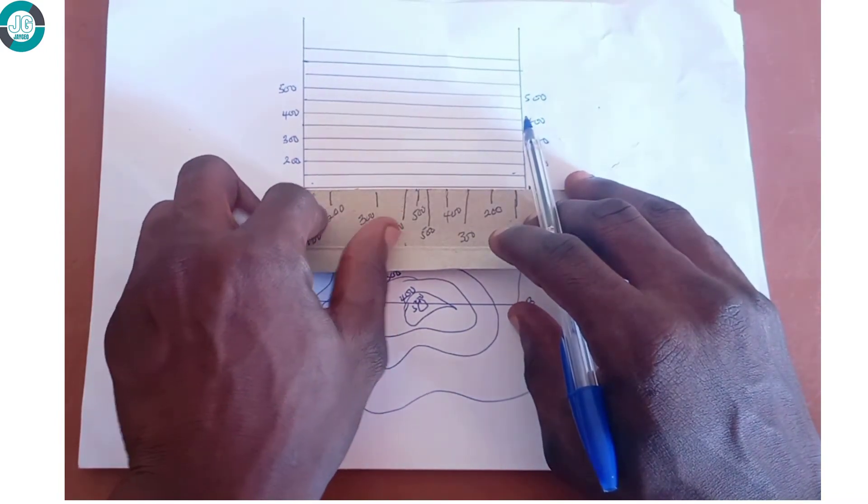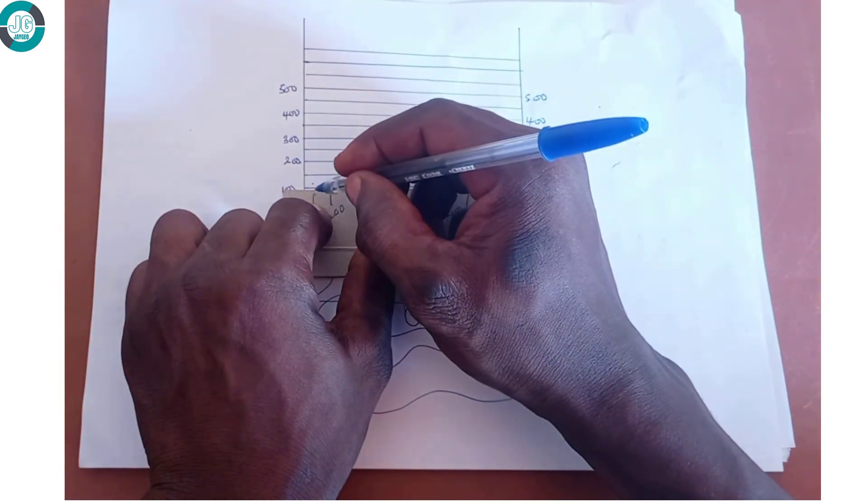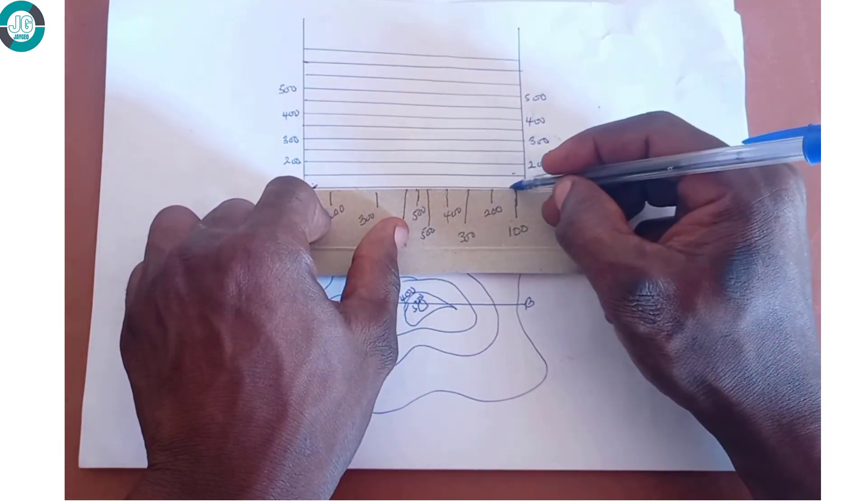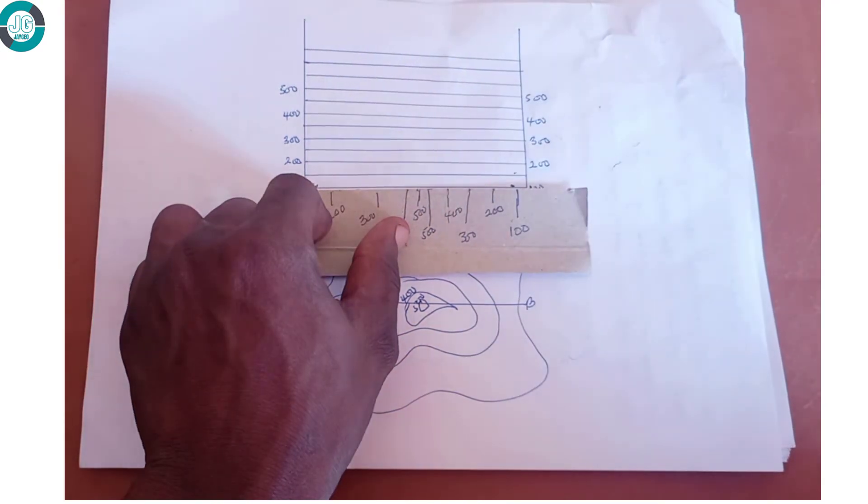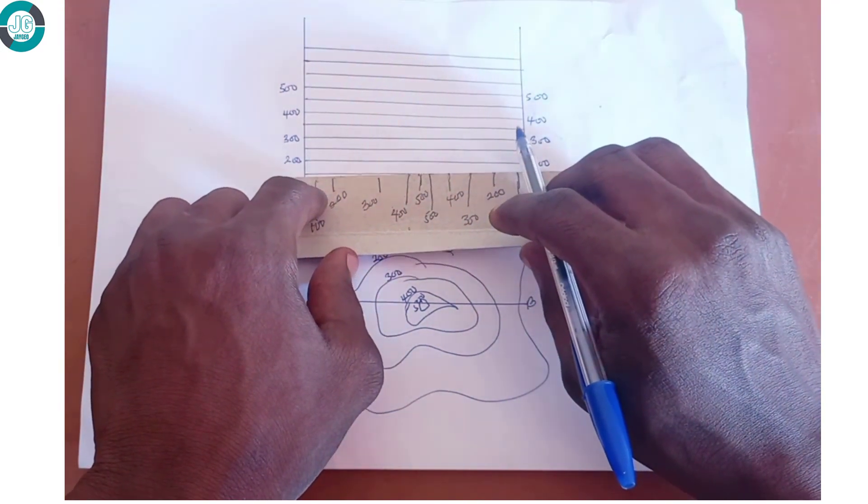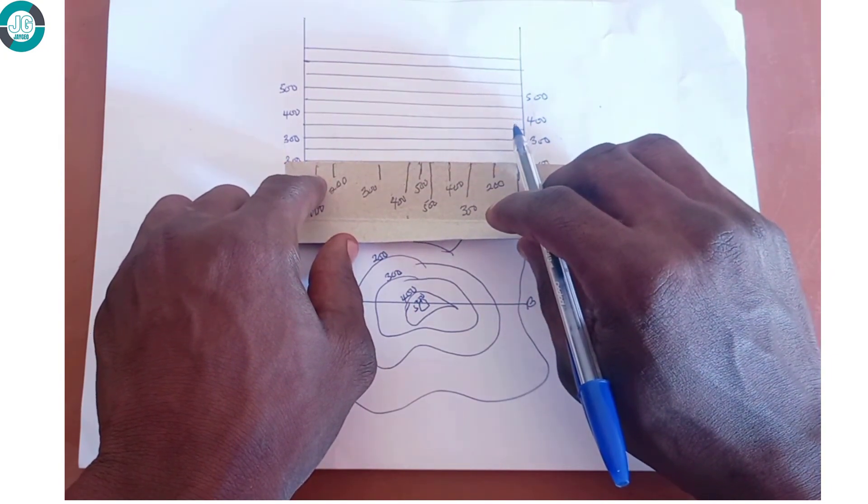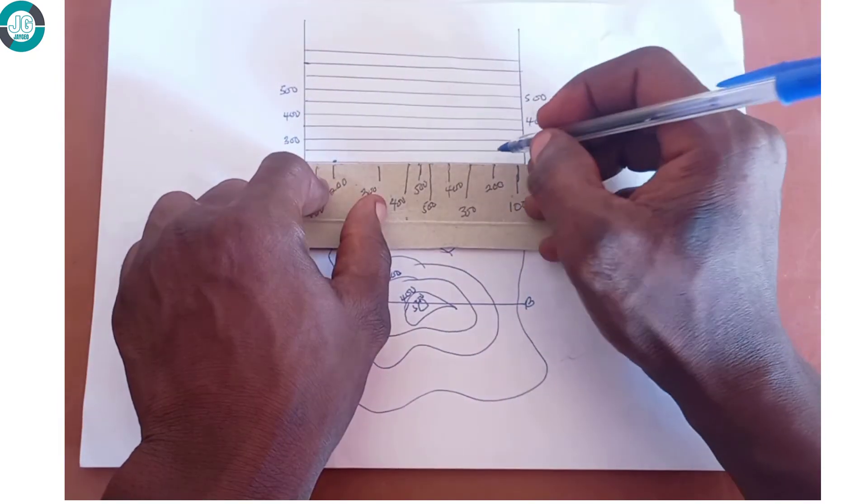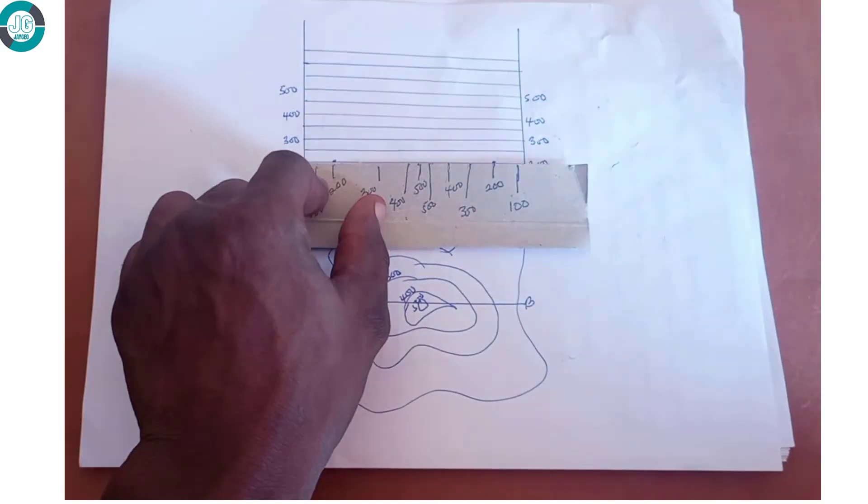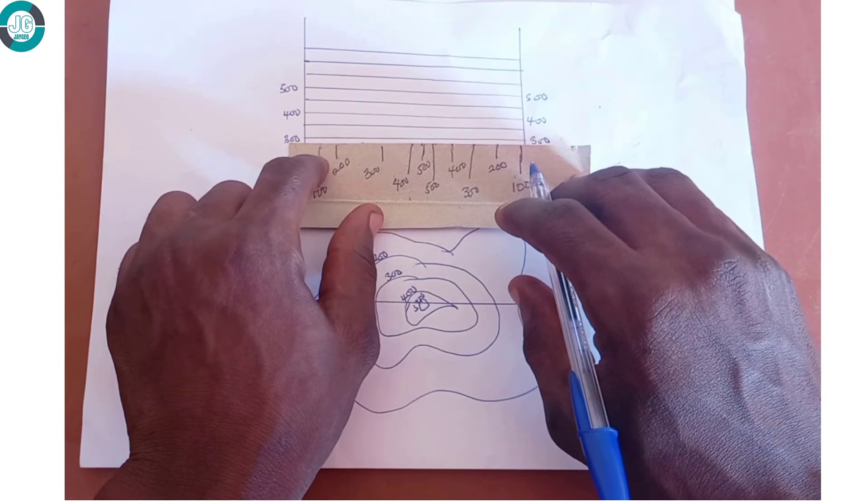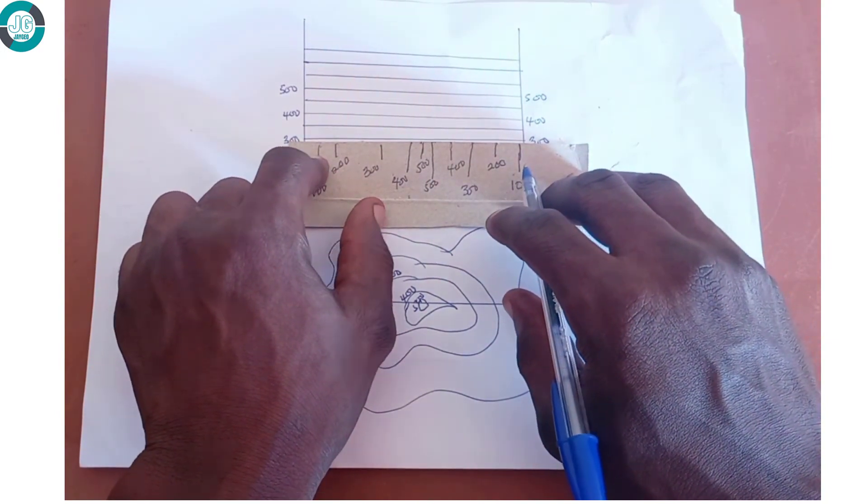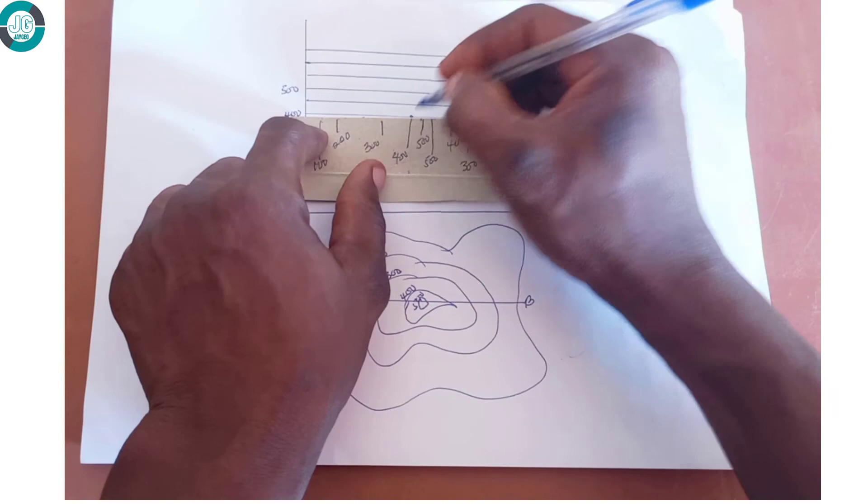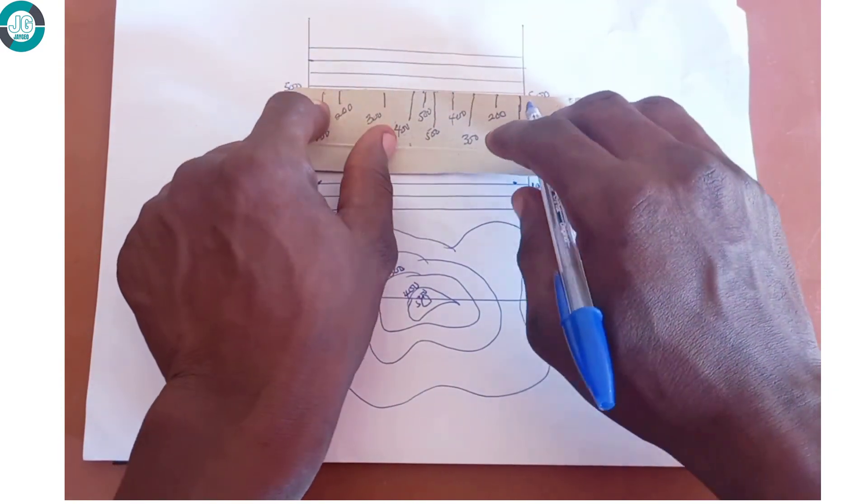So we move it up to the 100 column and draw a point there. One point here, another point there. We then move it up to the second contour value, which is 200. So we have 200 here and 200 here too. Then we move it to 300, 400, and 500.